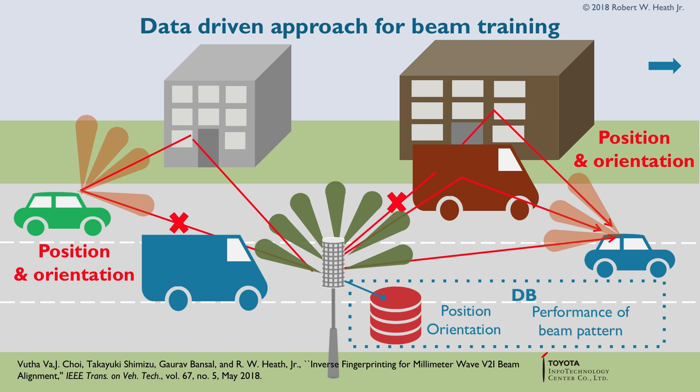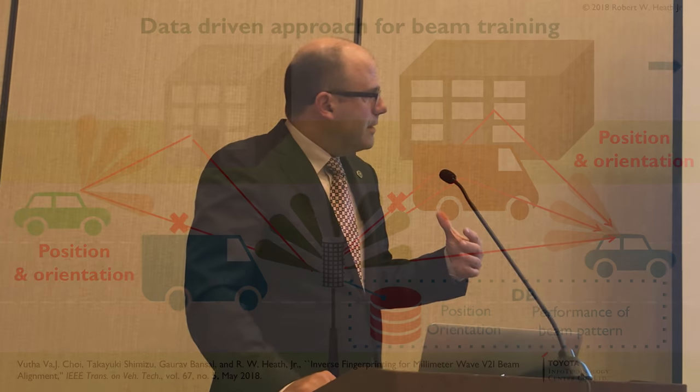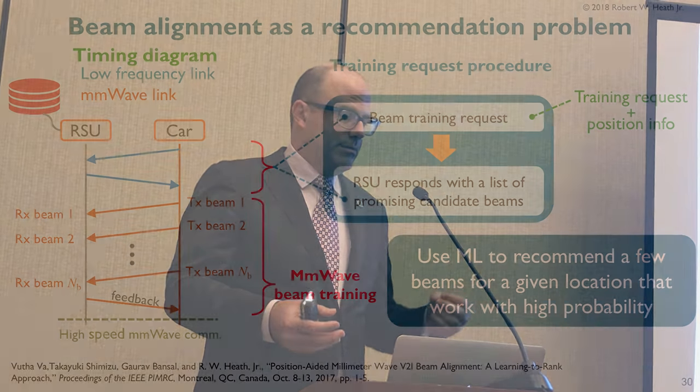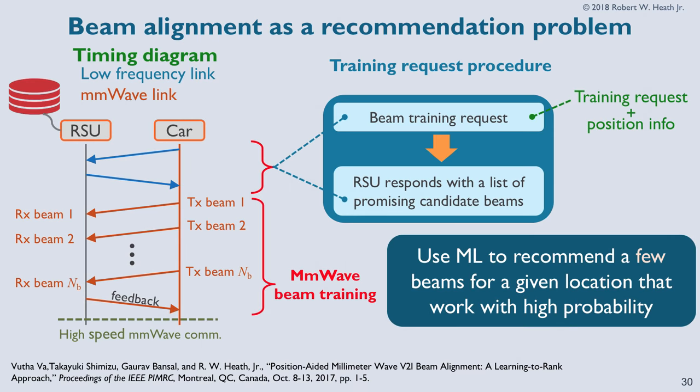For me, beam alignment is a recommendation problem. In the training procedure, the car may be on a low-frequency link and say: hey base station, let's do millimeter-wave together, here's my location. The base station figures out the combination of beams to try, sends them to the user saying: you try these receive beams, I'm going to try these transmit beams. The recommendation concept is widely used in things like the Netflix problem — you're logging into Netflix or Amazon and you see a movie, then there are other recommendations. They're trying to recommend things that are not too similar but that you're likely to pick one with high probability.